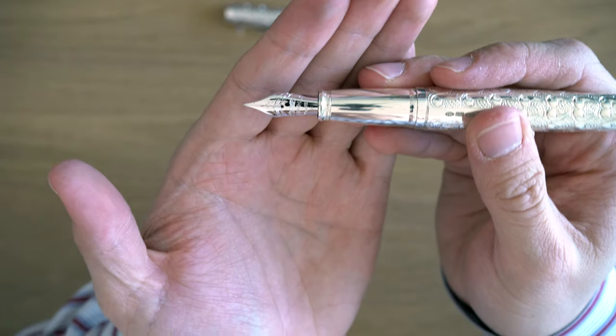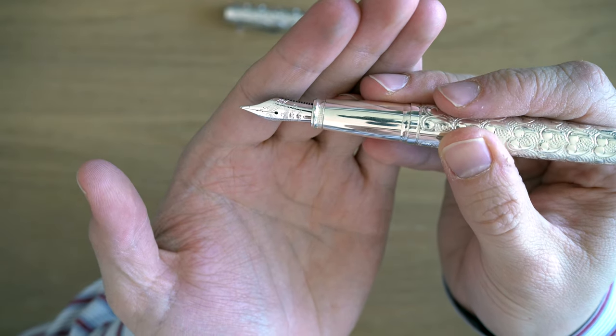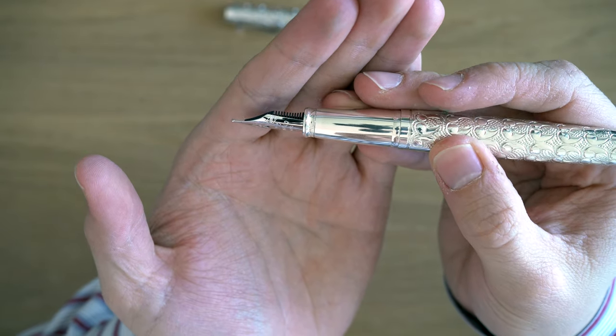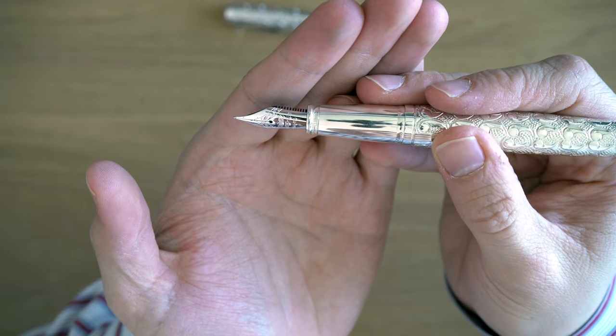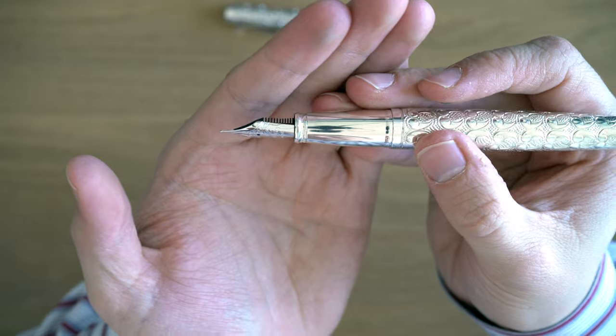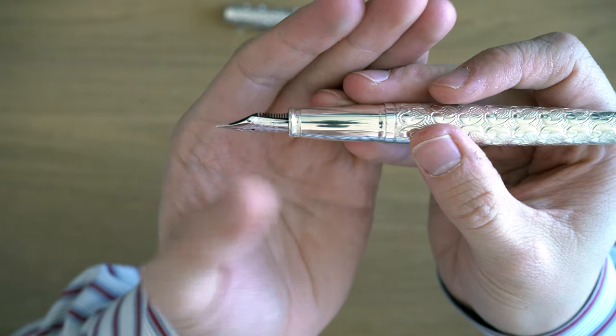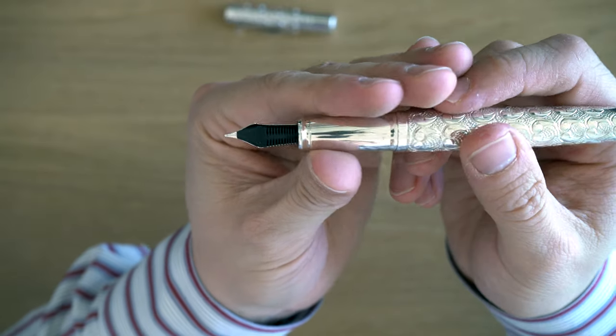Here we have a number six Yovo nib, and it has not a ton of decoration. It says Yard-O-Lead, and then it says 18k, 750, and F to note that it is a fine. This pen only comes in fine, medium, and broad. There are no other nib options.